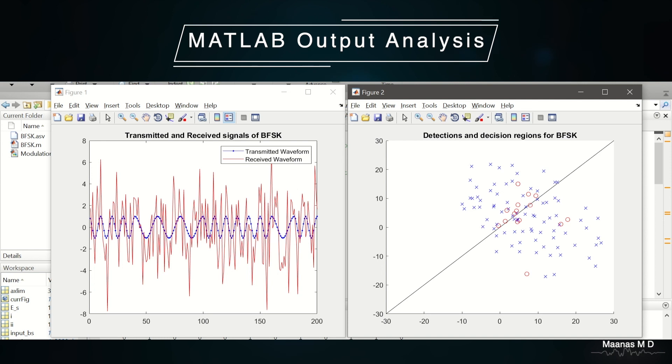Now let us consider figure 2. Figure 2 is a plot between the input bits and the output demodulated bits. If the bits are the same then it gets marked in an X. If the bits are different or if there is an error it is marked in a circle.